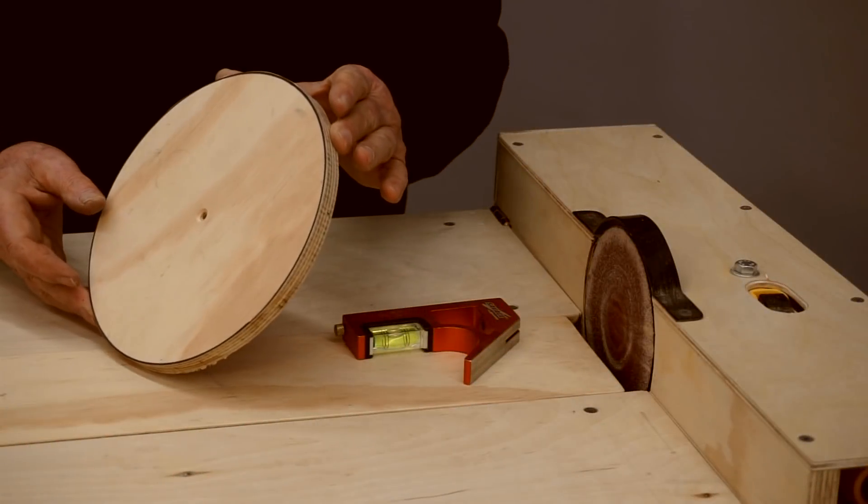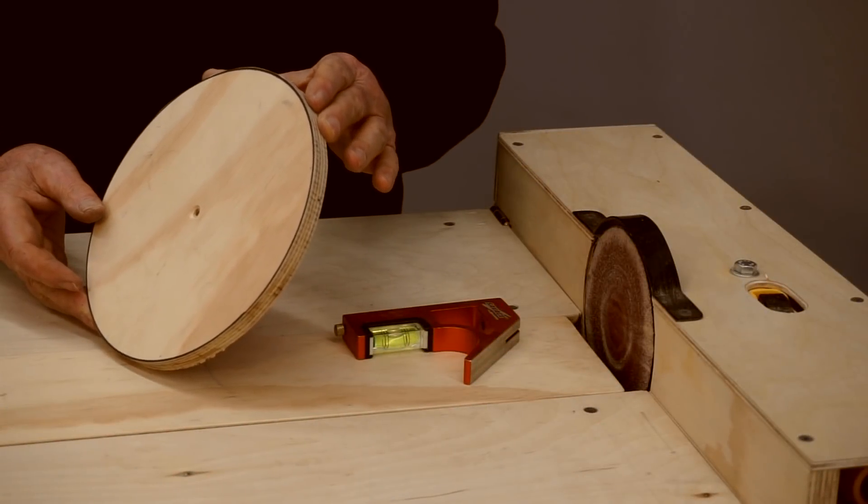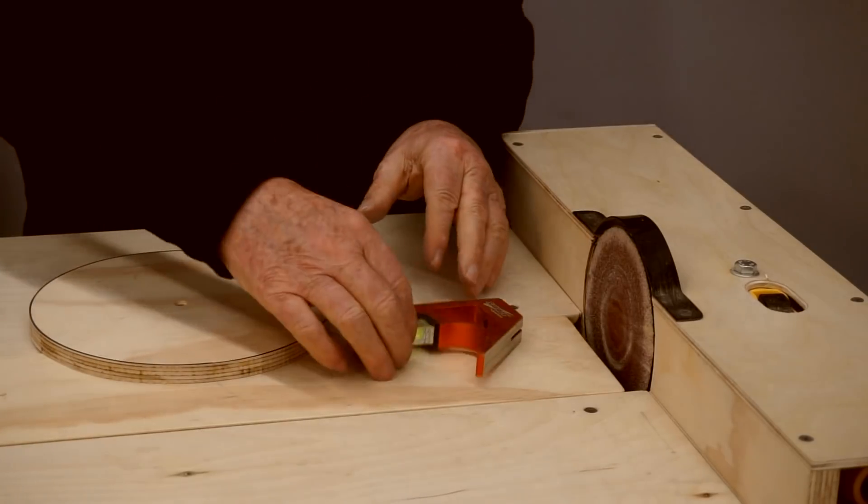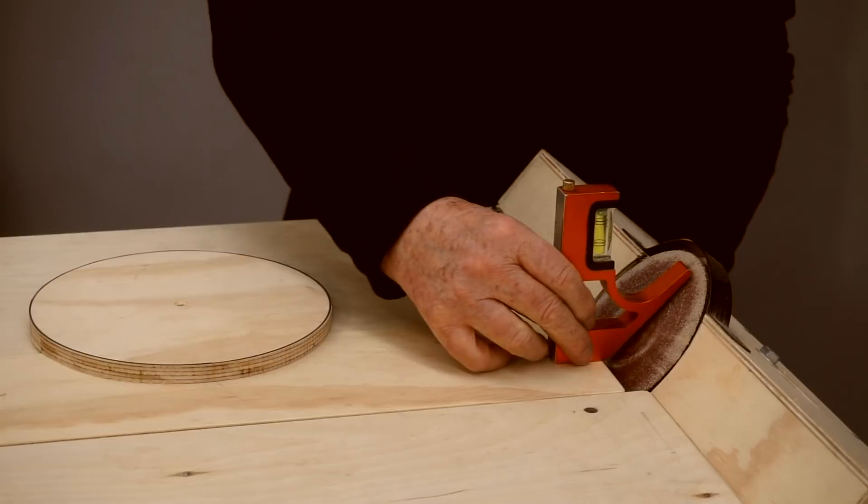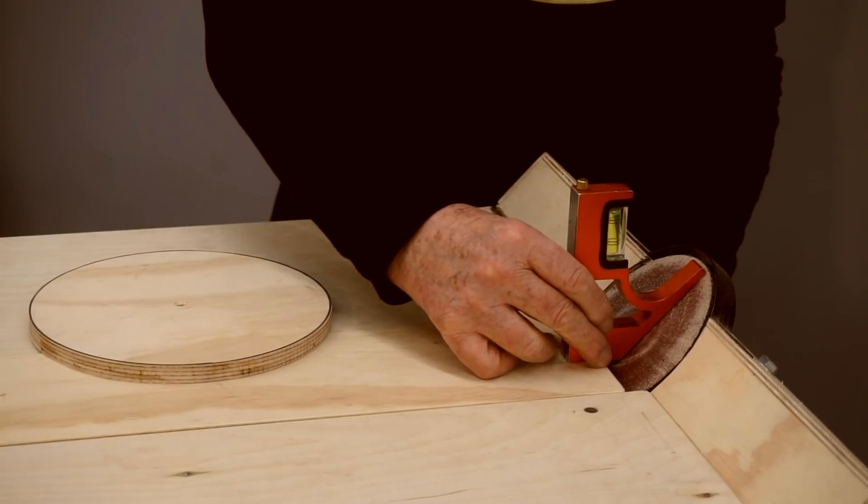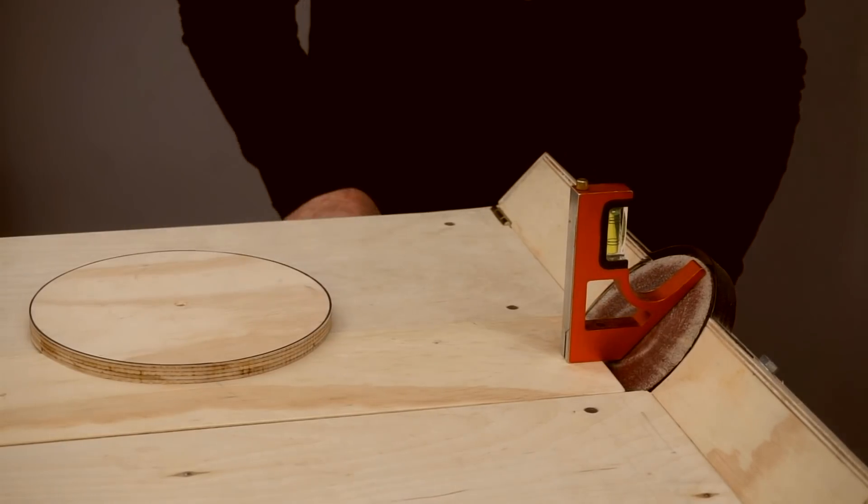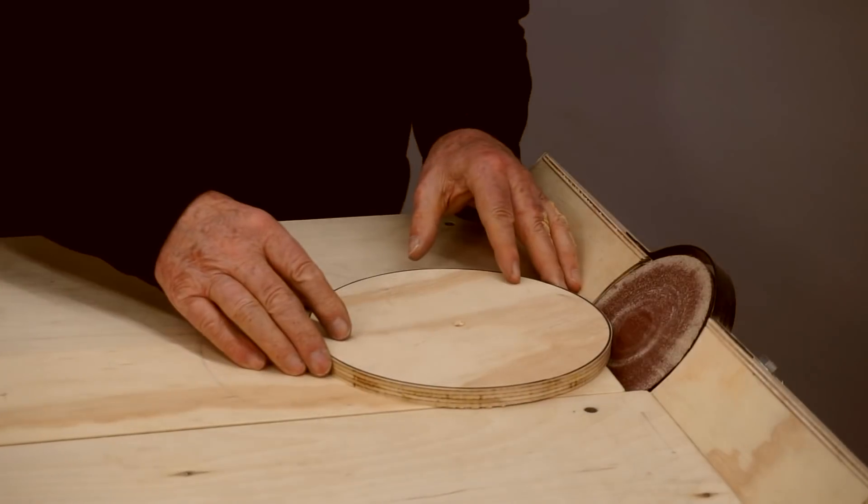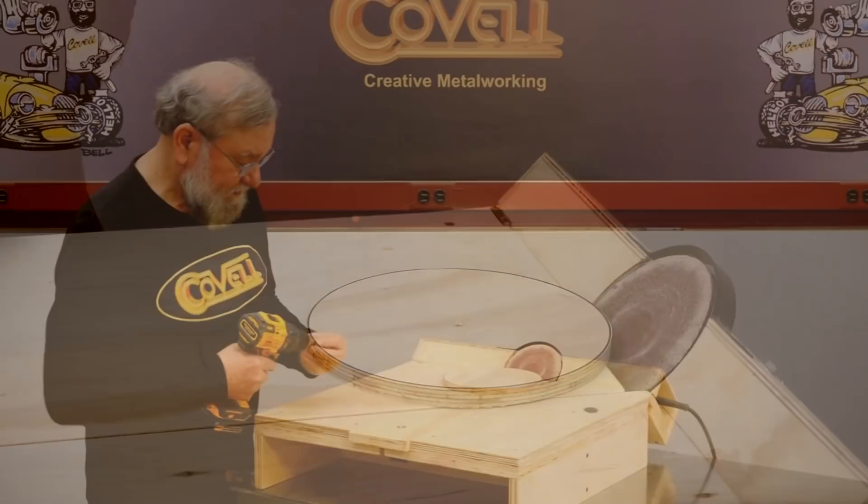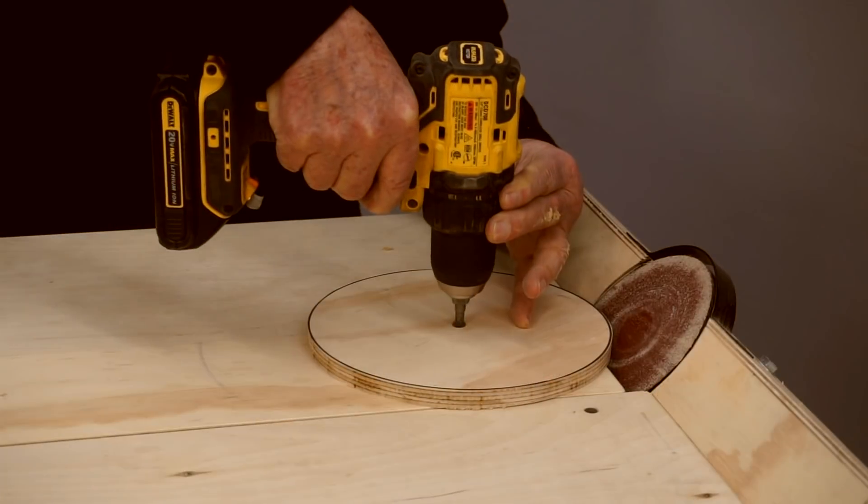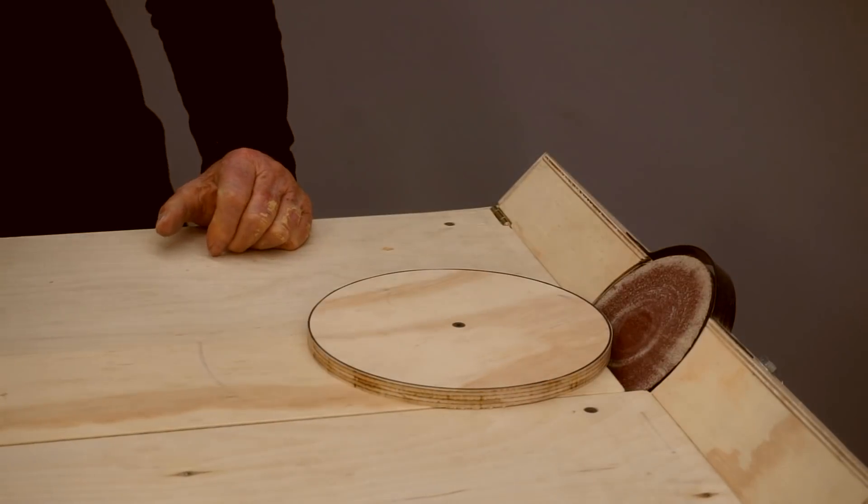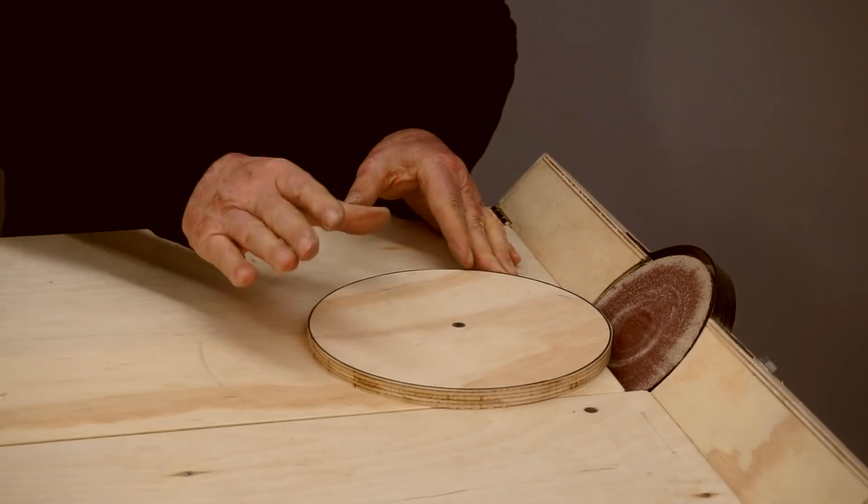So let's sand a disc with a 45 degree edge angle now. The first step is to rotate the disc back to 45 degrees. So I'll loosen the lock for the box, move it back to 45 degrees, lock it into place. Then I'll move the disc up, put a drywall screw in the center to lock it in place. Now I'll put my safety gear on and start sanding the edge.